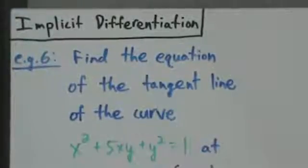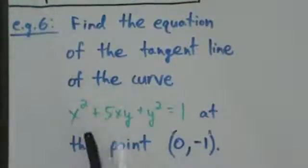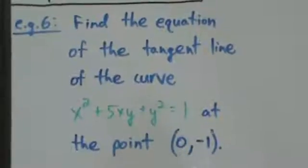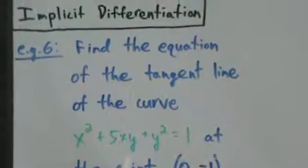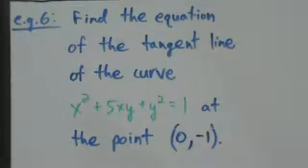In this example with implicit differentiation, what we're going to do is find the equation of the tangent line of the curve x squared plus 5xy plus y squared equals 1 at the point (0, -1). It's pretty much just like all the other problems where you have to find a tangent line, but the only difference is now you have to use implicit differentiation. Remember that implicit differentiation is just the chain rule, so it won't be too bad.